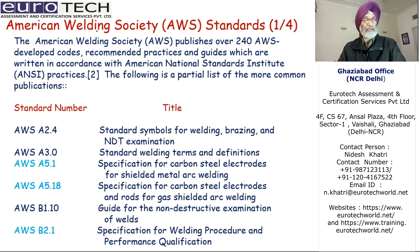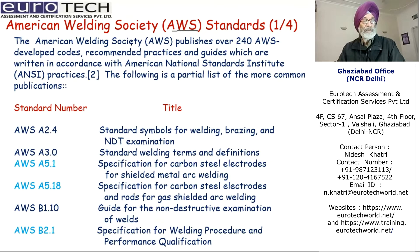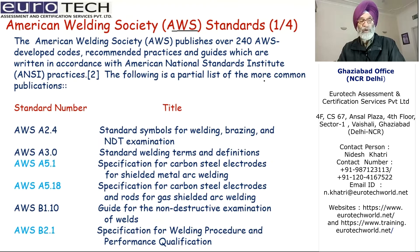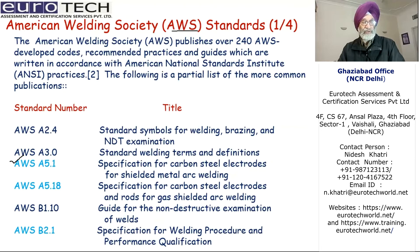Coming to American Welding Society — AWS standards, which has been listed over four pages. We will just highlight the important ones. The American Welding Society published over about 240 AWS-developed codes, recommended practices and guides, which are written in accordance with the American National Standards Institute — that is ANSI. The following is a partial list of the more common publications. The important ones we are covering here include AWS A5.1, which is the specification for carbon steel electrodes for the SMAW process.